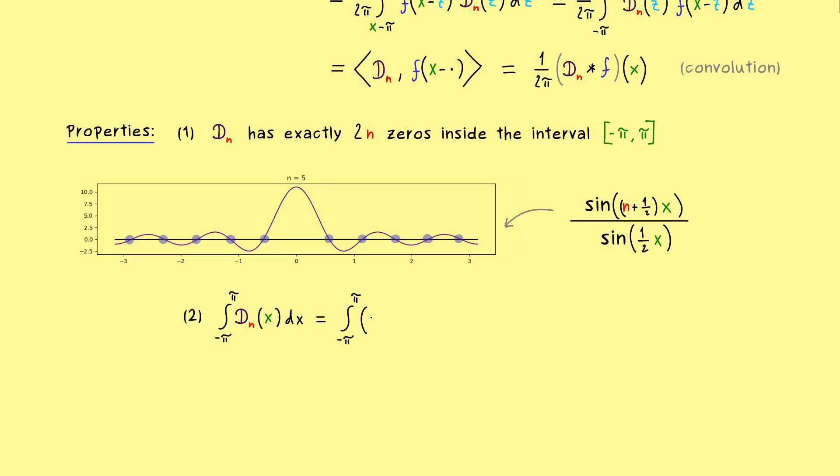Simply because the Dirichlet kernel D_n is just given as a sum of exponential functions. So first we have the constant 1 plus e^(ix) plus e^(-ix), and then we just continue with higher exponents, but nothing else changes. And I write it like that because then you can actually see that we just have to integrate 2π periodic functions. Hence, every integral here is definitely just zero, with the exception of the constant in the front. And this one just gives us the factor 2π.